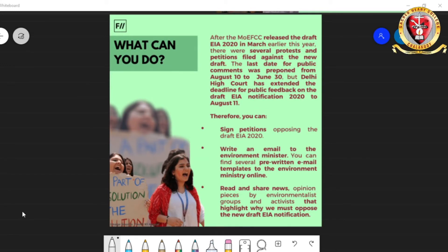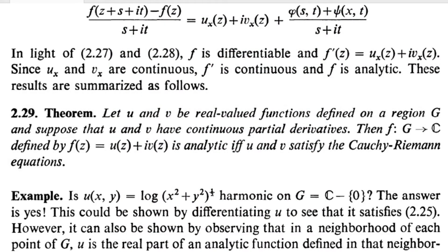Today we are going to prove Theorem 2.29, which says: let u and v be real-valued functions defined on a region G, and suppose u and v have continuous partial derivatives. Then the function f: G → ℂ defined by f(z) = u(z) + iv(z) is analytic if and only if u and v satisfy the Cauchy-Riemann equations. We are going to give the proof of this.